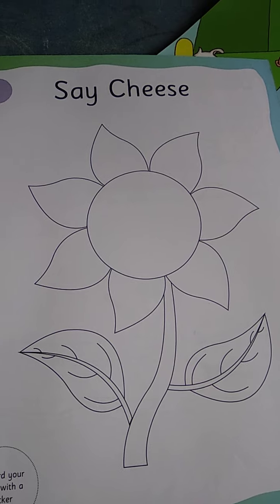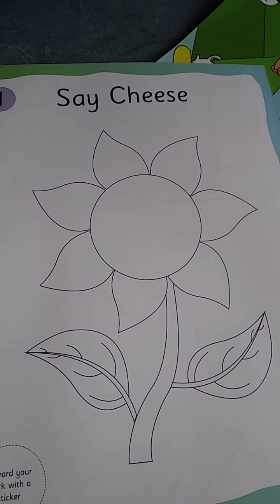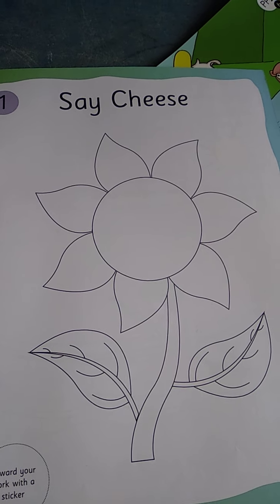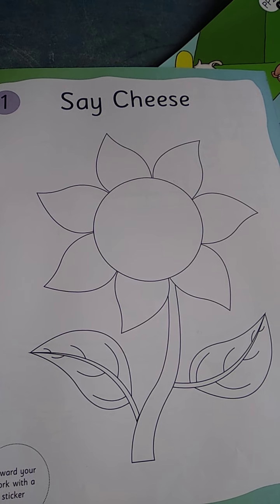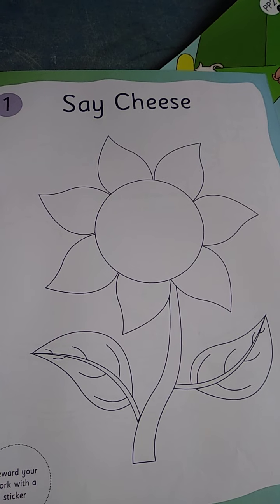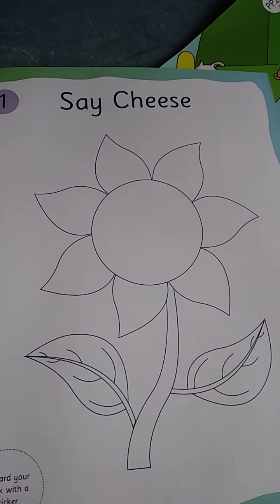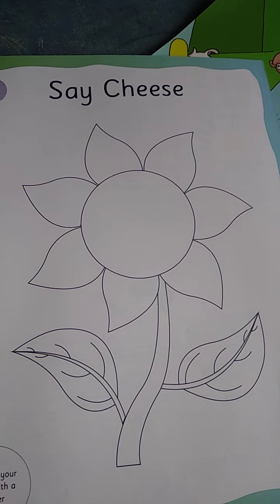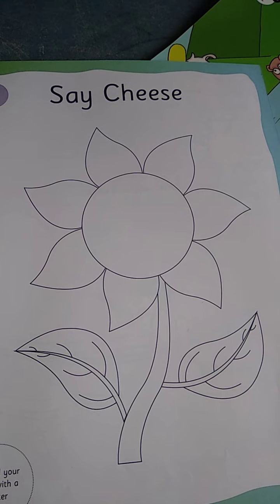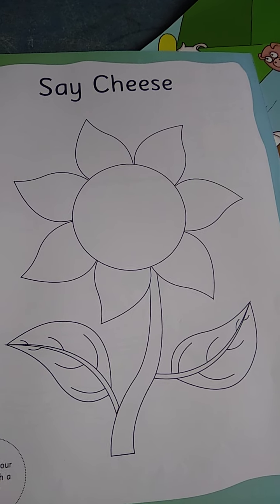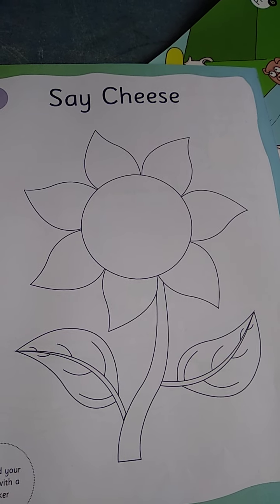So a flower is there. First of all, all of you take crayons, and one your photograph and gum. Glue.